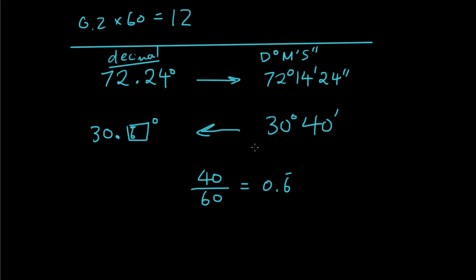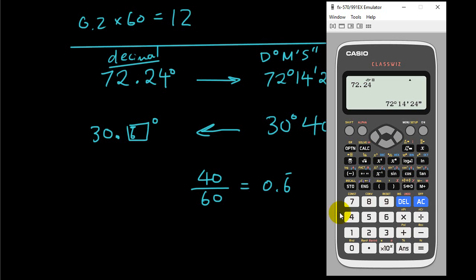Now if you want to do it on your calculator, then you can just type in 30 degrees, 40 minutes, press equals and then just press the degrees, minutes, seconds key to convert. So it tells you the answer, 30 point 66, 30 point 6 recurring.